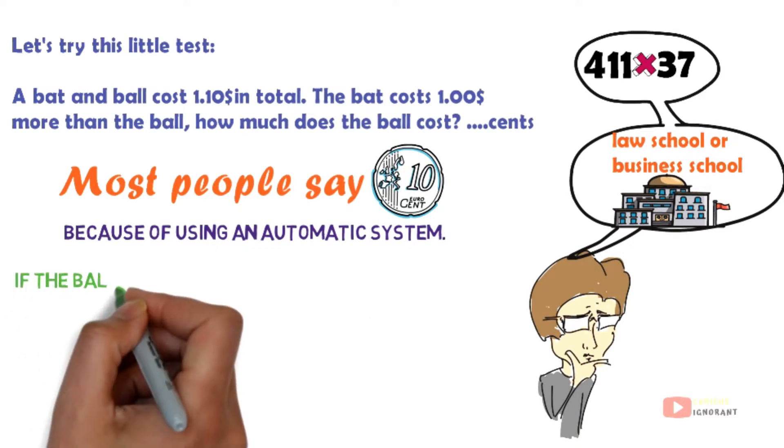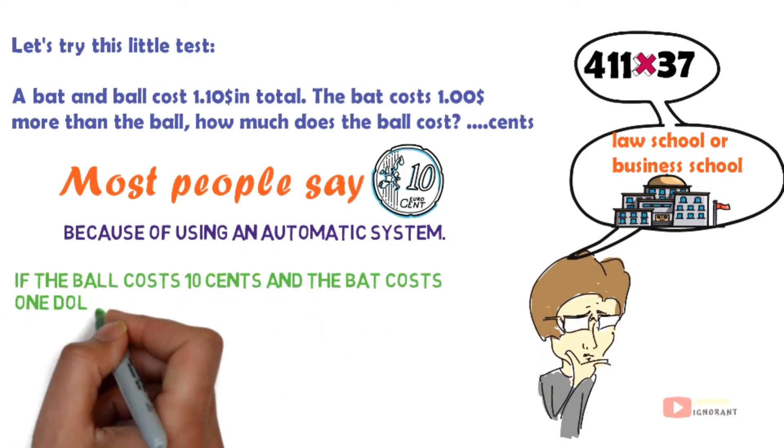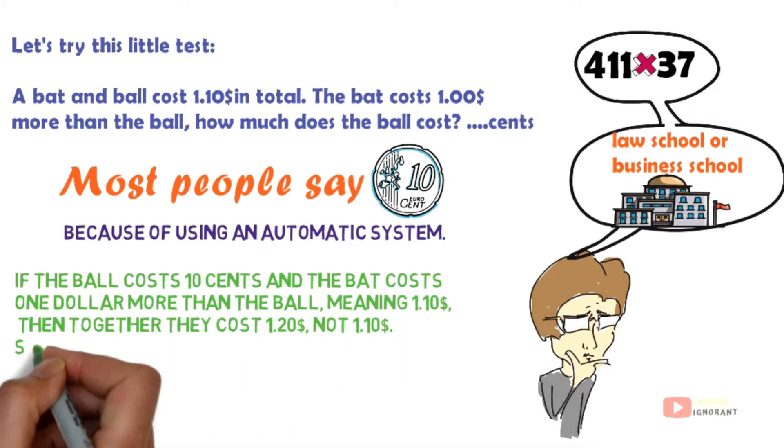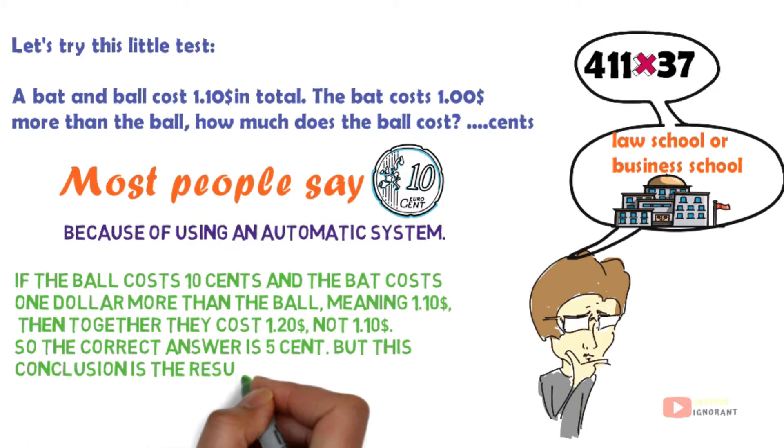If the ball costs $0.10 and the bat costs $1 more than the ball, meaning $1.10, then together they cost $1.20, not $1.10. So the correct answer is $0.05. That makes sense, but this conclusion is the result of using a reflective system.